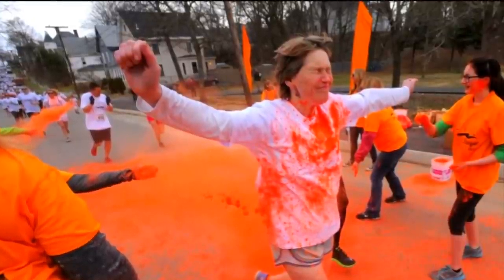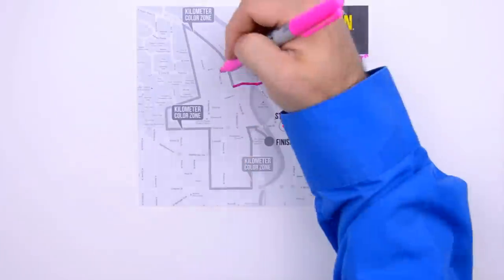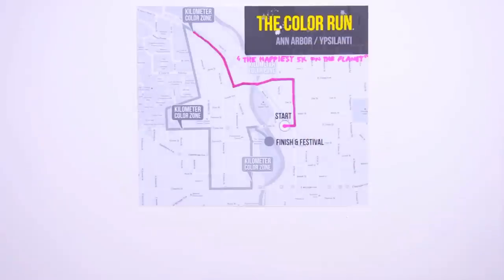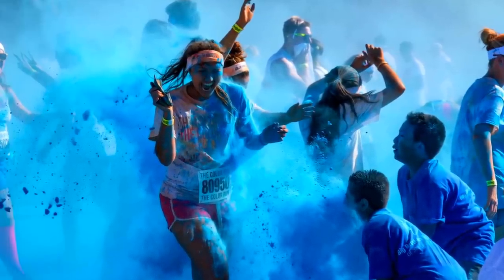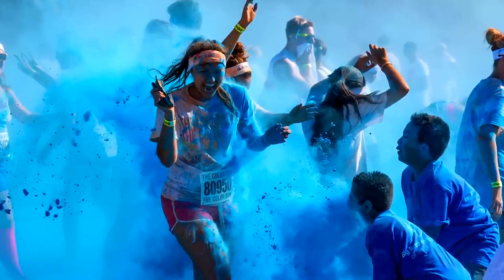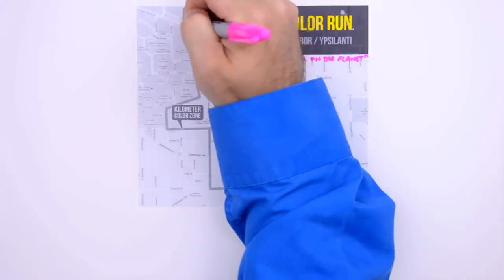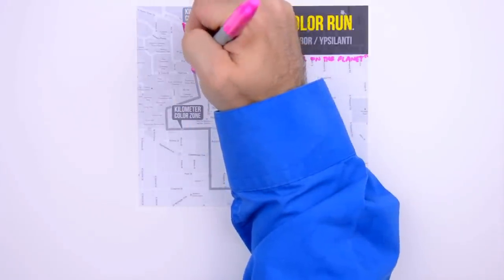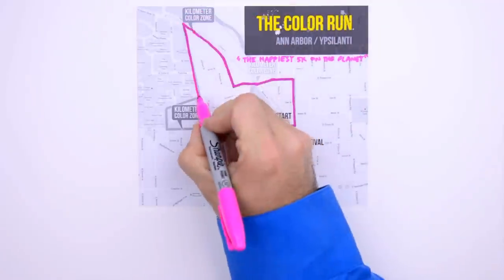Next, the runners turn north for a few blocks, hit the second so-called kilometer color zone, where another monochromatic dousing ensues, before turning south and jogging along my alma mater, Eastern Michigan University. After a few blocks,